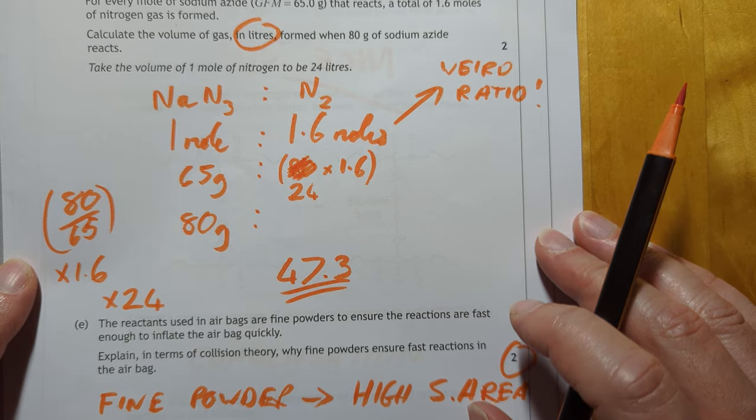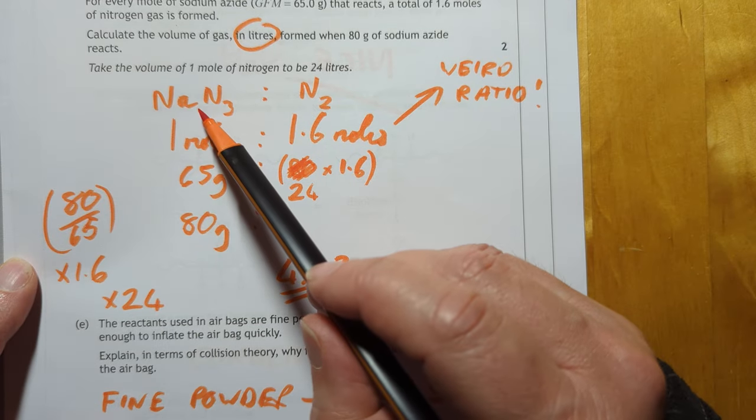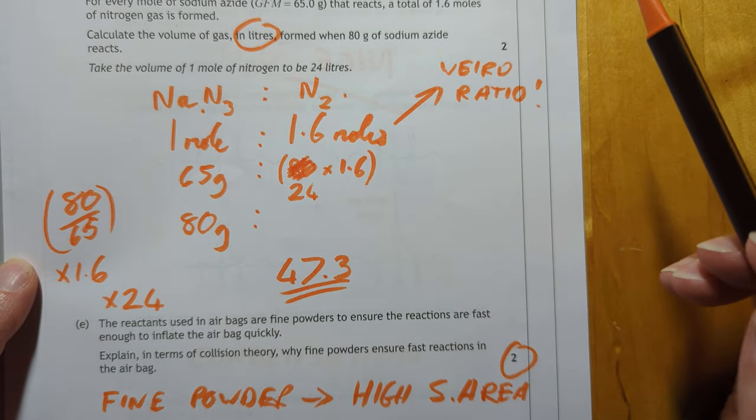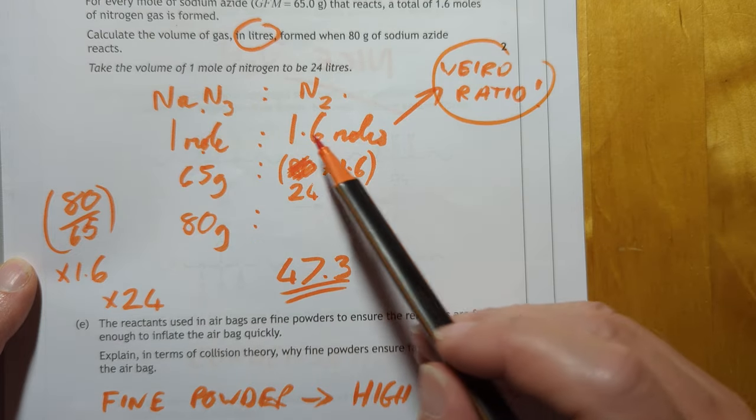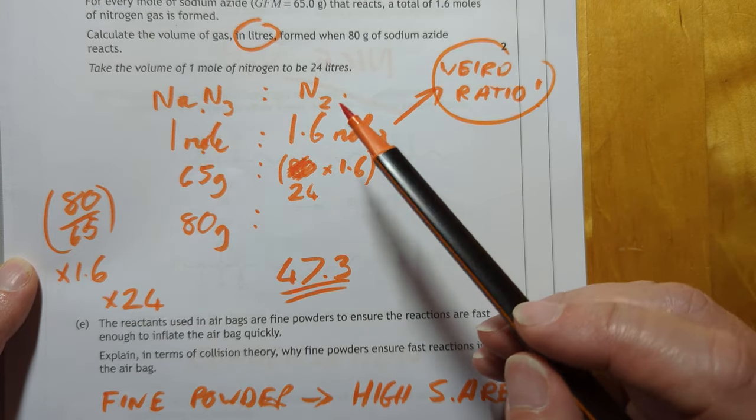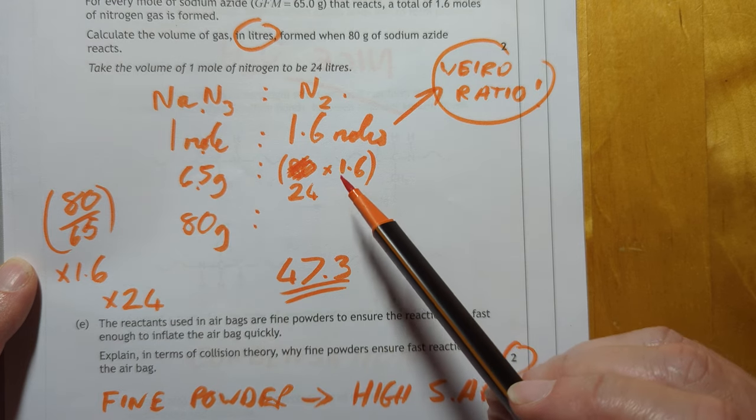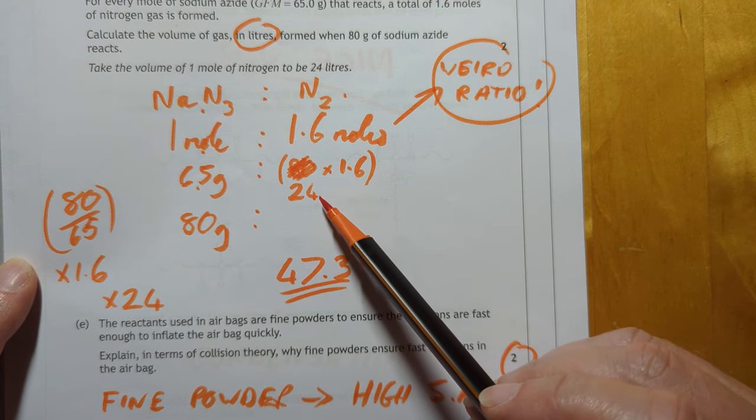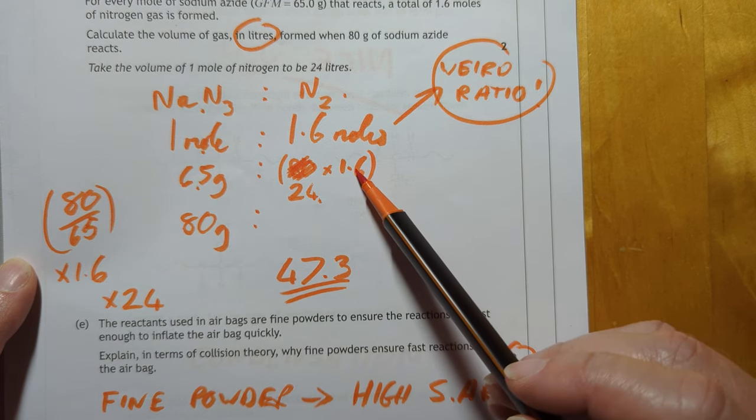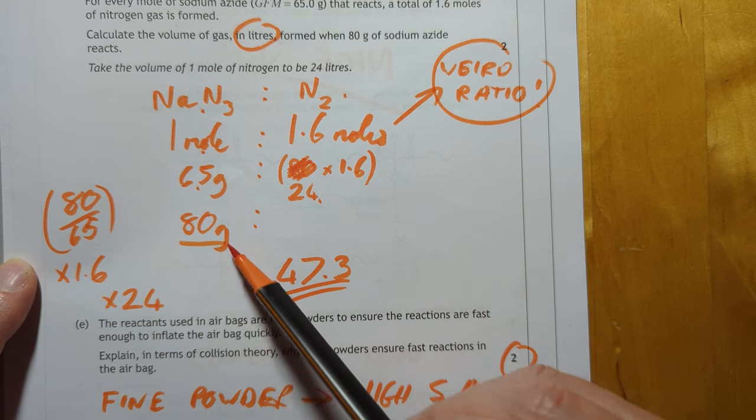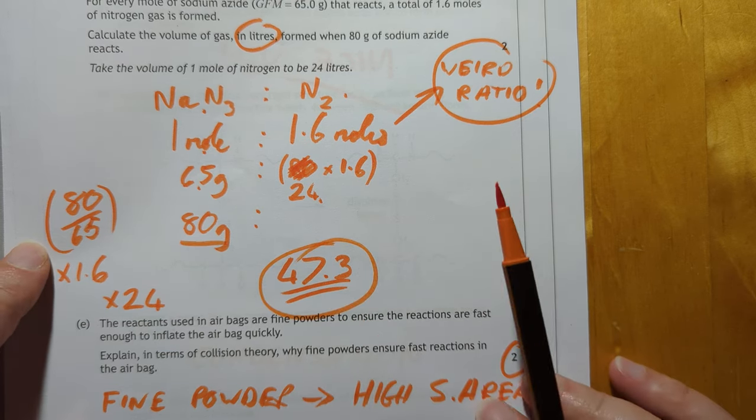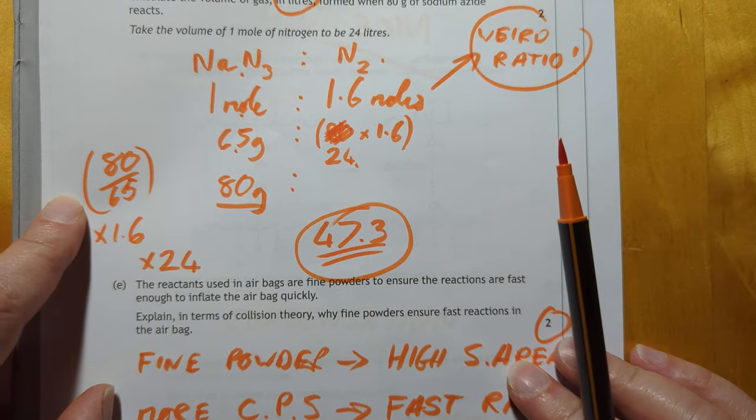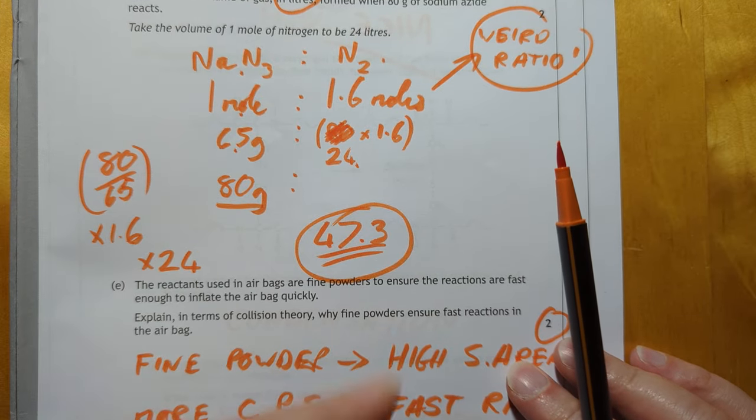What do we have here? Sodium azide and nitrogen gas. Weird ratio here. That's really weird. 1 to 1.6. So, 65 grams would have made 24 liters times 1.6. You've got 80 grams. So, my calculations show 47.3. You could, of course, do it moles-wise. That's what this is here. This is the moles equivalent. Same answer.